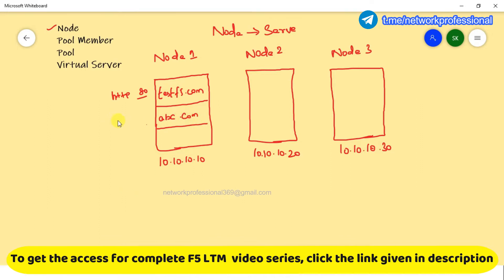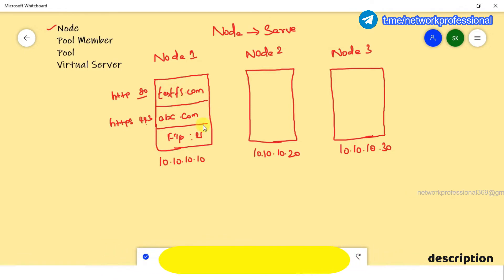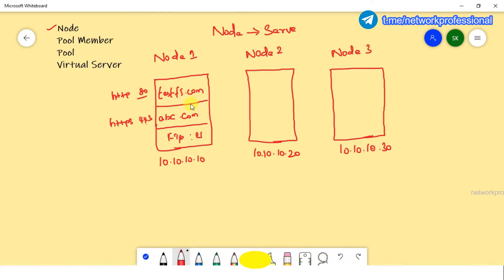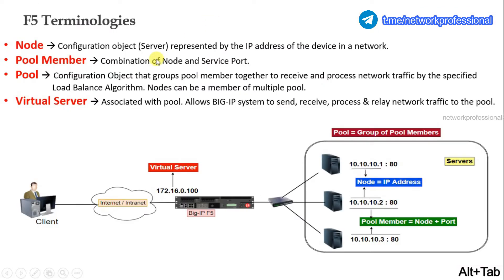Maybe the server can run an HTTPS service with port 443. Or we can use the FTP service on port 21. So if you want to run the node, you can run the applications in any way. The pool member is the combination of a node with the service port.